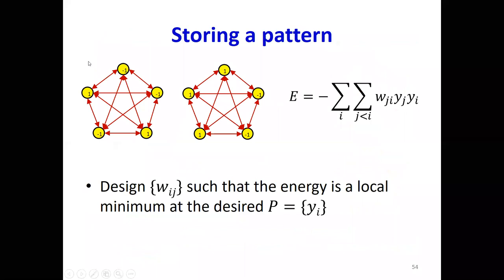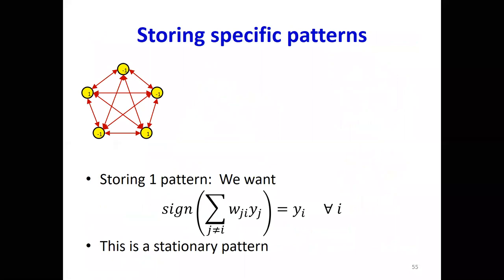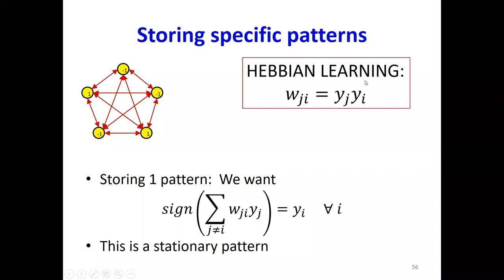Here's what we want: we want to design these weights such that the energy is a local minimum at the target patterns. Let's say I want to store one pattern. I want this pattern to be stationary, which means that for every neuron, the sign of the field must be the same as the output of the neuron itself — that's when the neuron is not going to flip. We are going to do this using very simple Hebbian learning. Every weight is simply going to be the product of the two neurons that we're trying to store — the weight connecting neuron i to neuron j is simply the product y_i y_j.